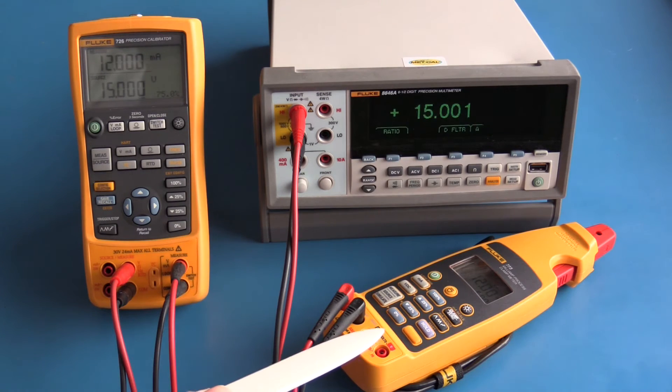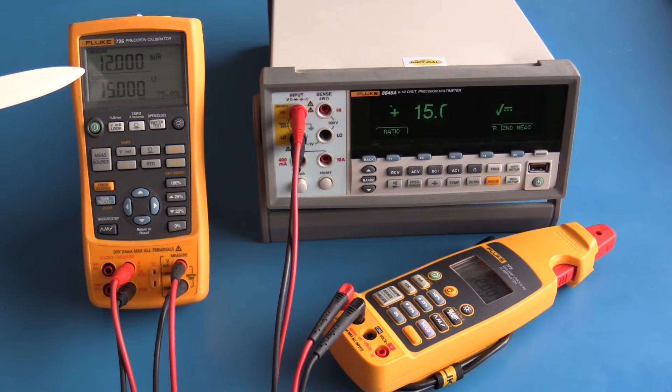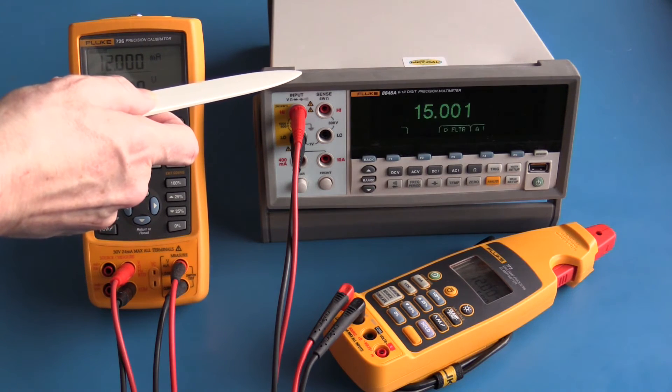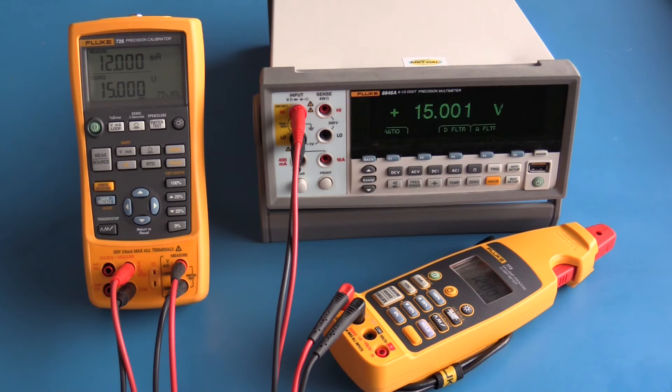Currently the Fluke 773 is set up to source 12 milliamps and that's being measured here on the Fluke 726. The Fluke 726 is also sourcing 15 volts and that's being measured here on the Fluke 8846a. The dual display on the Fluke 726 makes this possible.